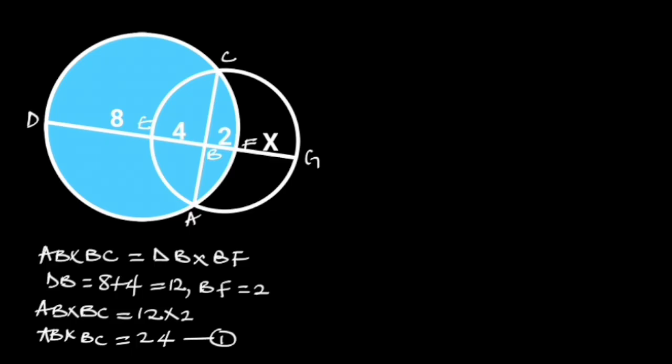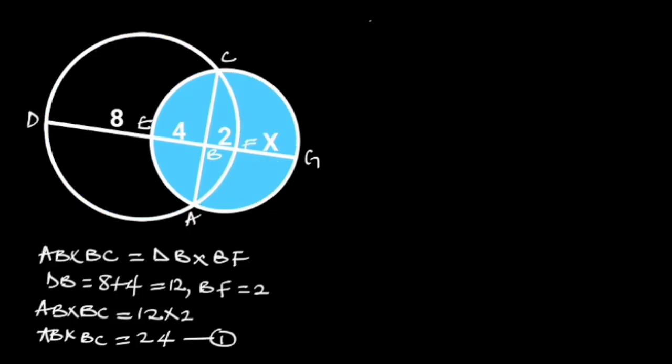Next, let's focus on the smaller circle. Also, from the intersecting chord theorem, AB times BC is equal to EB times BG.